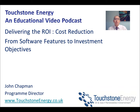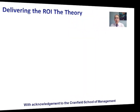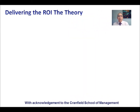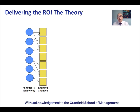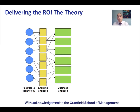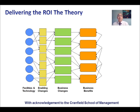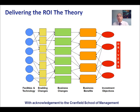First, the theory. We will use an approach developed by the Cranfield School of Management. On the left hand side we identify our facilities and technology. From that we have features that we deliver, which enable changes in the way that we do business. Those changes will lead to business changes, and it's from the business changes that we expect to get business benefits. The business benefits should lead through to our investment objectives.